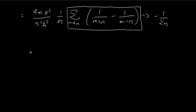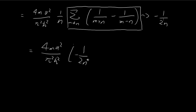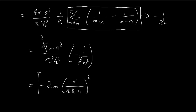Now applying this result: with the summation equal to negative 1 over 2n, we multiply by the prefactor 4m alpha-squared over pi-squared h-bar-squared divided by n, and negative 1 over 2n. The 2 in the denominator and the 4 in the numerator give a factor of 2. Rearranging, the second order correction to the energy levels is negative 2m alpha-squared divided by (n pi h-bar)-squared.